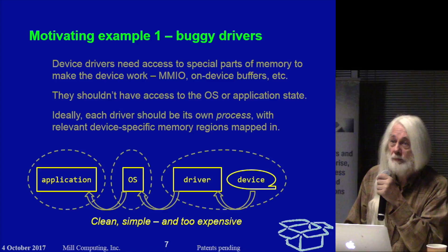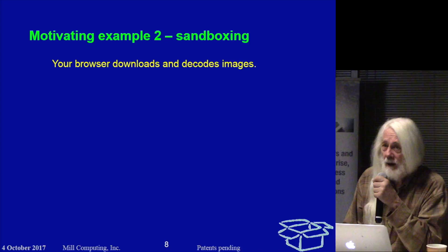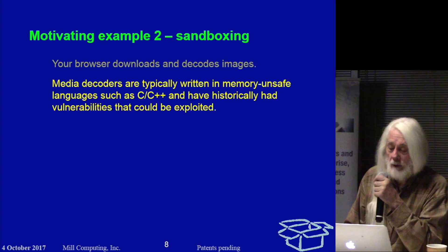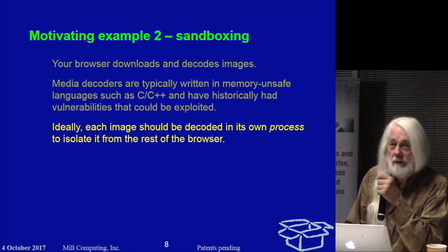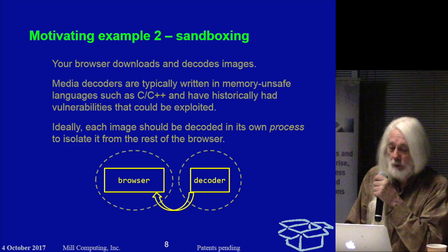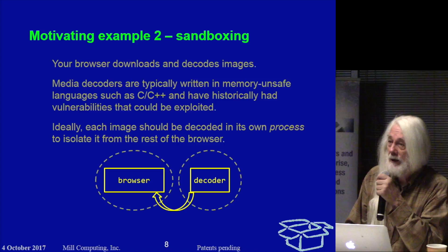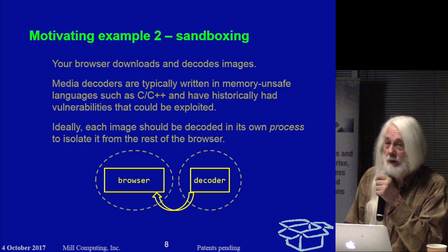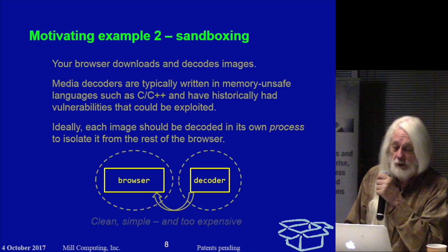The problem is that all the extra interprocess communications make this too expensive in practice. A different motivating example: a browser downloads and decodes images, so typically the decoders are written in unreliable languages and they're full of vulnerabilities. So the better approach would be for each image to be decoded in its own process, isolating it from the driver. What we really want is one process for the browser and one process for the decoder, and then data can be passed from the browser to the decoder and back without the decoder, which may have been perverted by some information in the image, being able to access and pervert the browser. Again, clean and simple — too expensive.